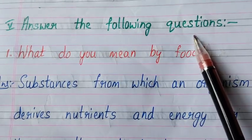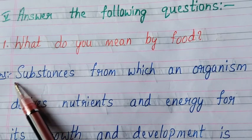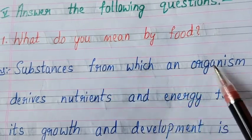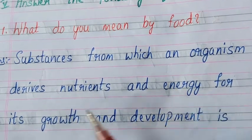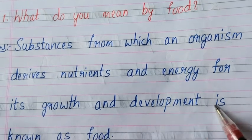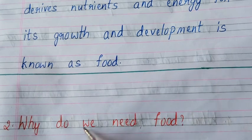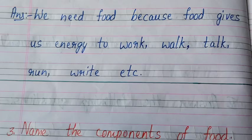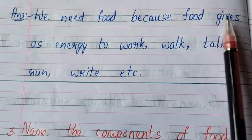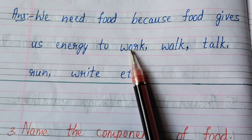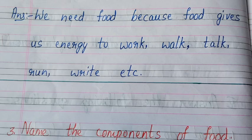Next, answer the following questions. Question one: what do you mean by food? Answer: substances from which an organism derives nutrients and energy for its growth and development is known as food. Question two: why do we need food? Answer: we need food because food gives us energy to work, walk, talk, run and write, etc.